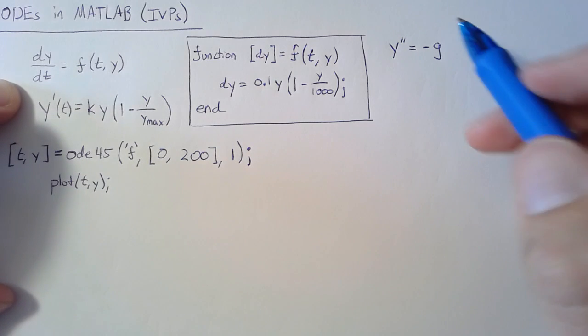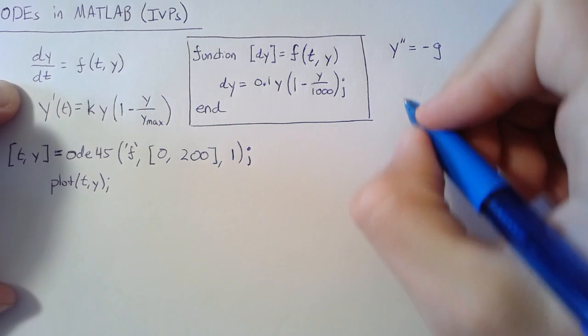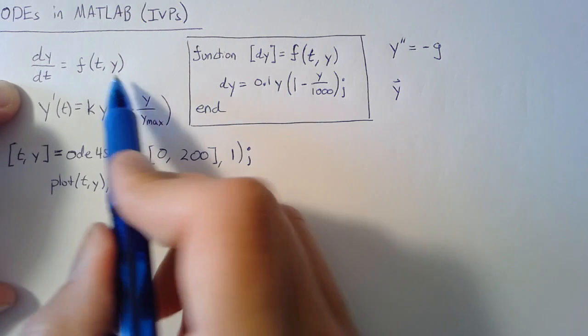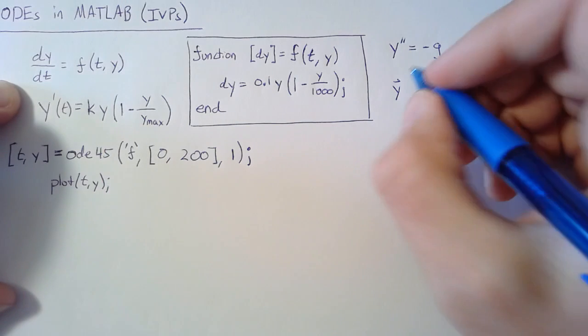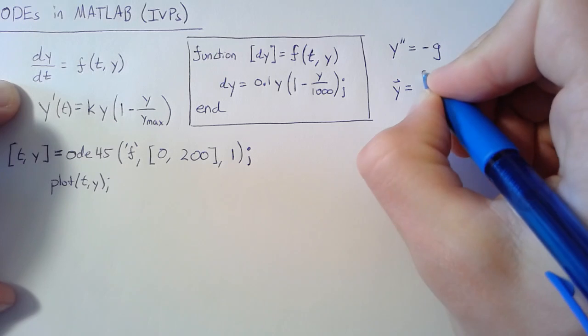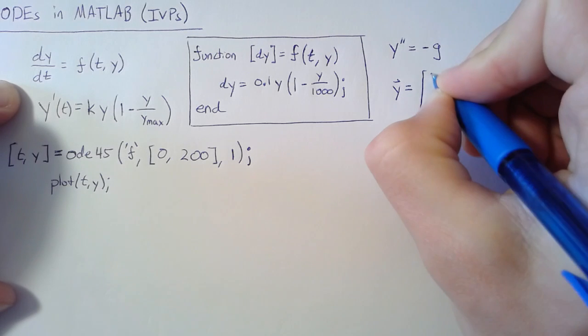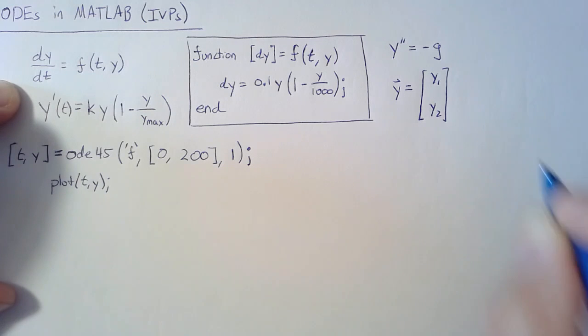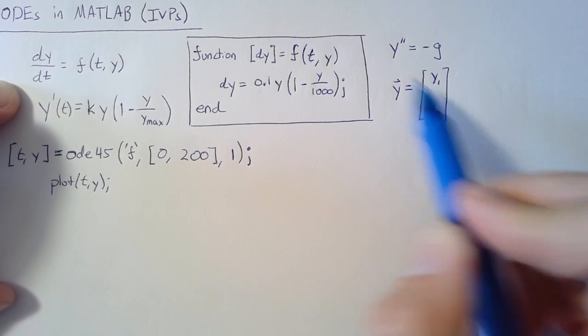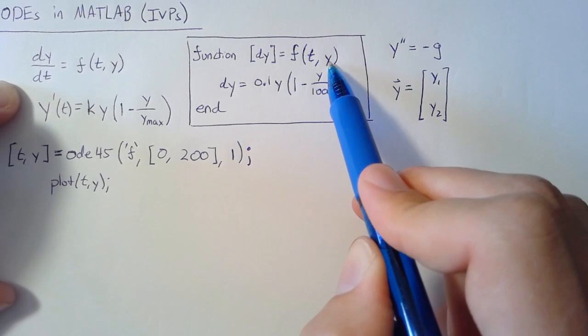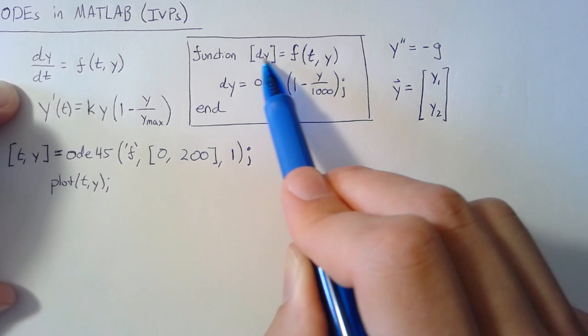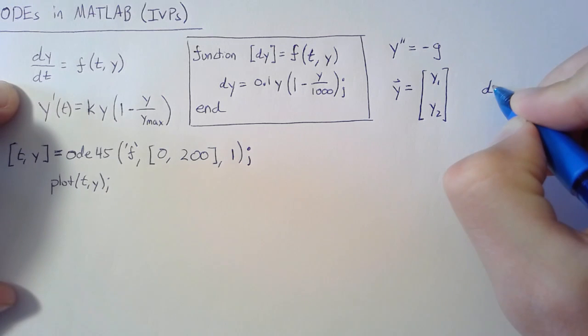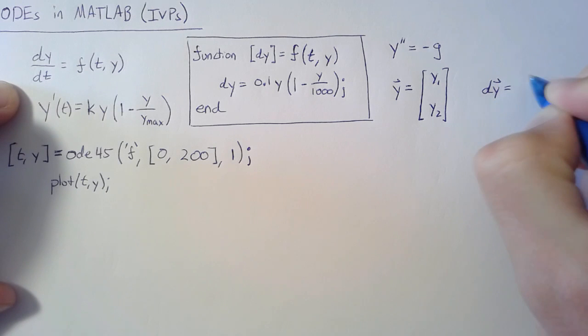The way we deal with this is we actually write y, this input, as a vector. This doesn't seem to be helping right away, but we'll get there. Our input variable will now have two values, y1 and y2, which means our output function also needs to have two values.